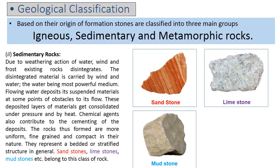Now let's discuss sedimentary rocks. Due to weathering action of water, wind, and frost, existing rocks disintegrate. The disintegrated material is carried by wind and water, water being the most powerful medium. Flowing water deposits its suspended materials at points of obstruction. These deposited layers of material get consolidated under pressure and by heat. Chemical agents also contribute to the cementing of the deposits. The rocks thus formed are more uniform, fine-grained, and compact in nature. They represent a bedded or stratified structure. Sandstones, limestones, mudstones, etc. belong to this class of rock.